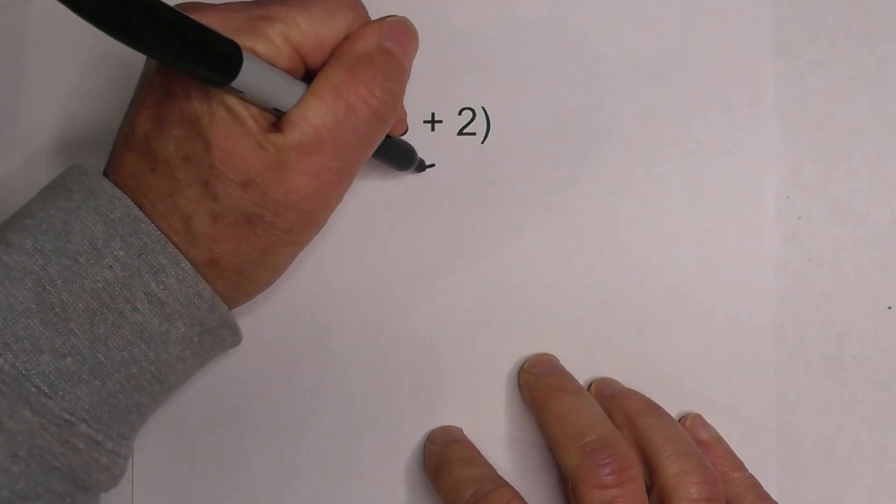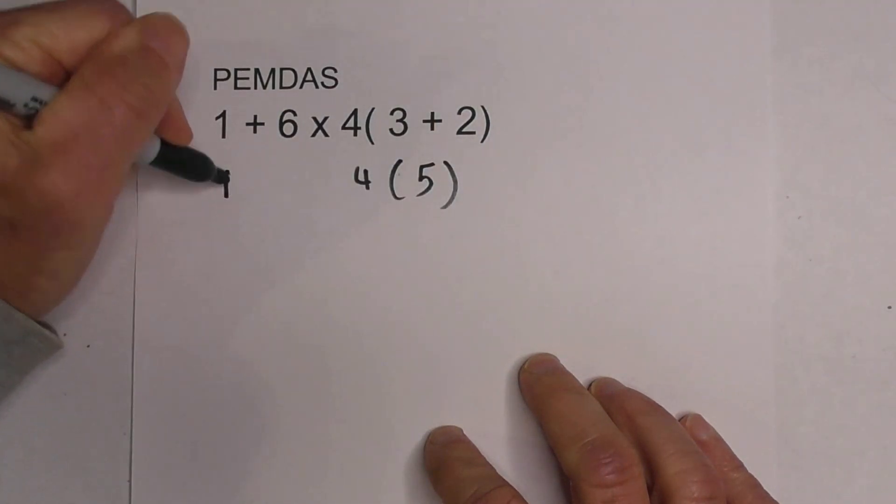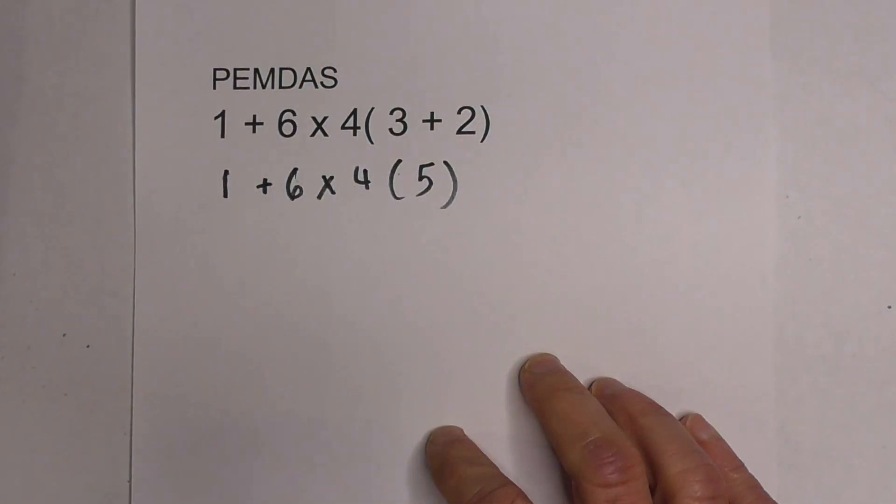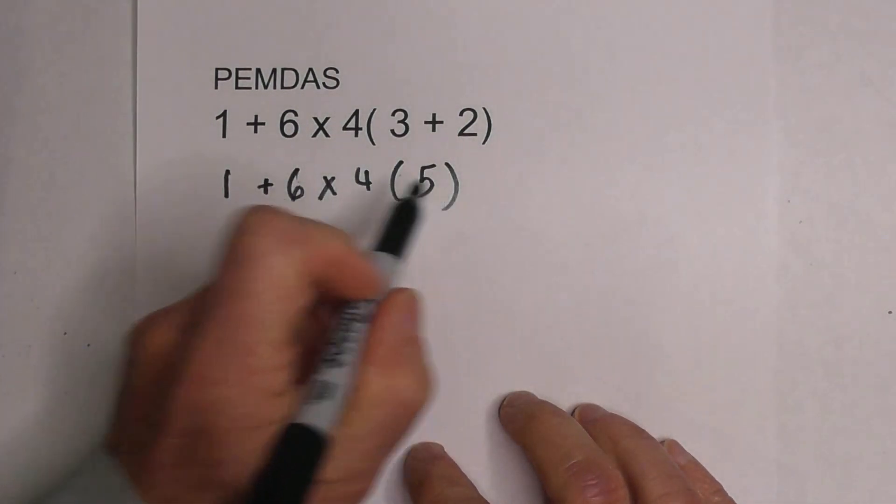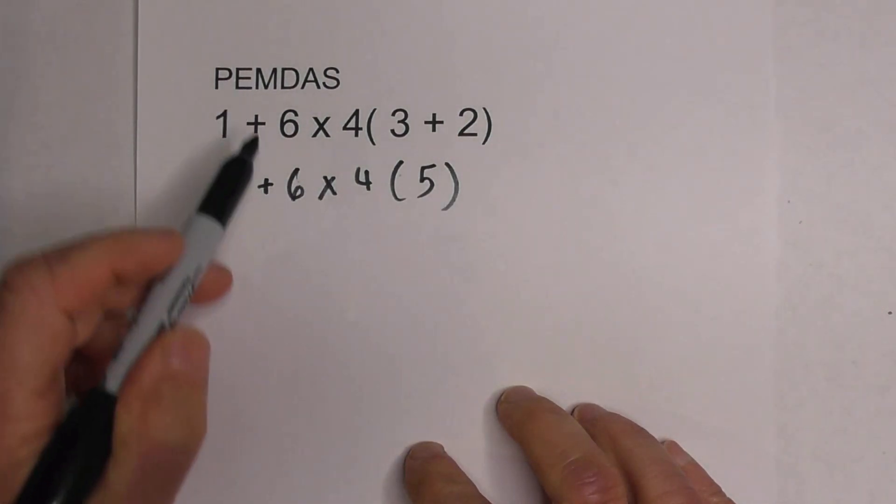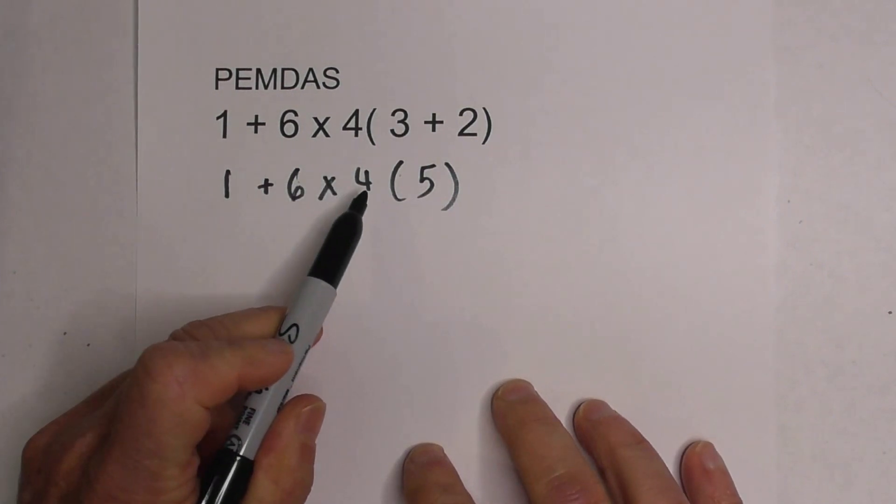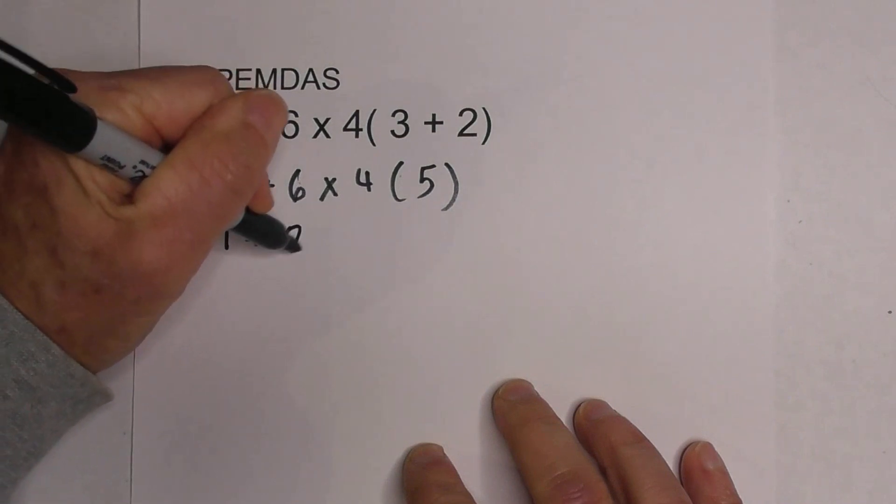So we're going to use PEMDAS. We're going to start with parentheses. So we have 3 plus 2 is 5, and I'm going to bring everything else down. So we have 1 plus 6 times 4 times 5. Now, remember we work left to right, and we're going to go to multiplication. So I'm going to go 6 times 4.